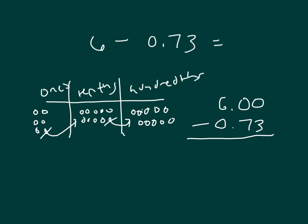And then we can subtract 1, 2, 3, and 7. 1, 2, 3, 4, 5, 6, 7. And then we can count them. That's 5.27 as our answer.